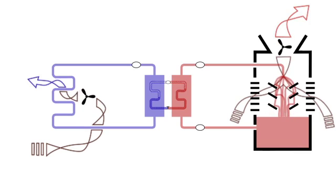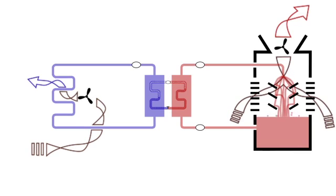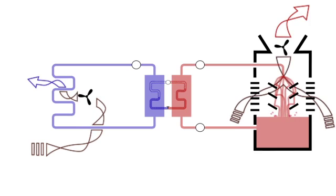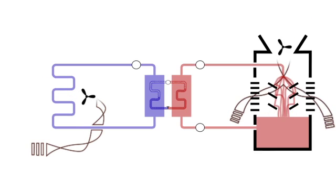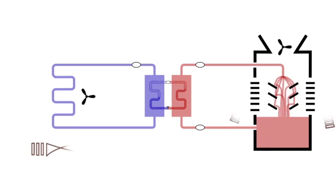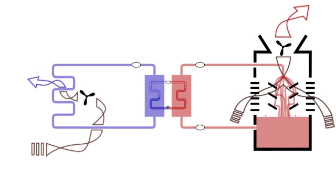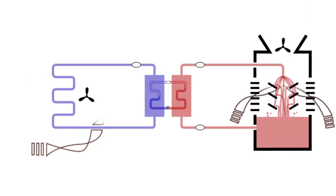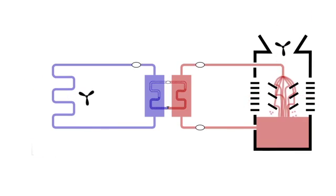Now, what you just saw is called a water side economizer because it relies on cold air to chill water. Like a water side economizer, an air side economizer uses the cold outside air to bypass traditional air conditioning in an effort to save energy. Why air condition when it's cold outside?